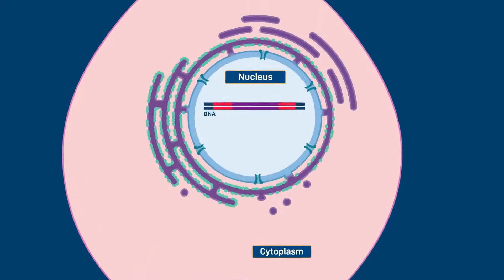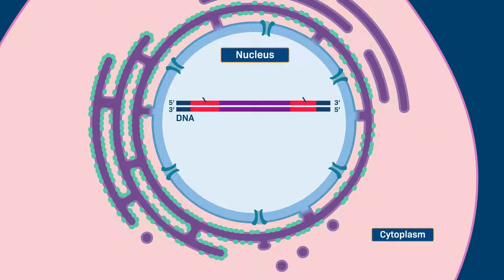Most eukaryotic genes contain segments of coding sequences, called exons, and non-coding sequences, called introns.